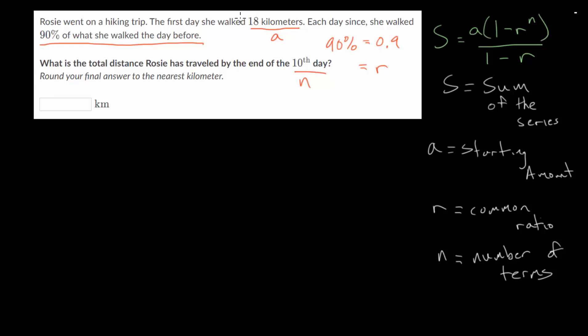So let's first just write out what this series looks like. And remember the first day, she walks 18 kilometers. And then each day after will be 90% of the day before. So we'll take this starting amount of 18 for day 2 and multiply that by 90%, which again is just 0.9. And for the third day, we're going to take what she walked the day before and multiply that by 90%. So we'll take 18 times 0.9 and multiply it again by 0.9, or we can have 0.9 squared, and so on.